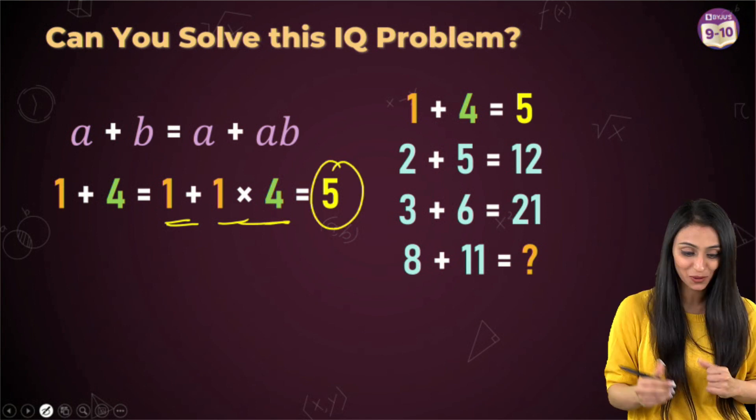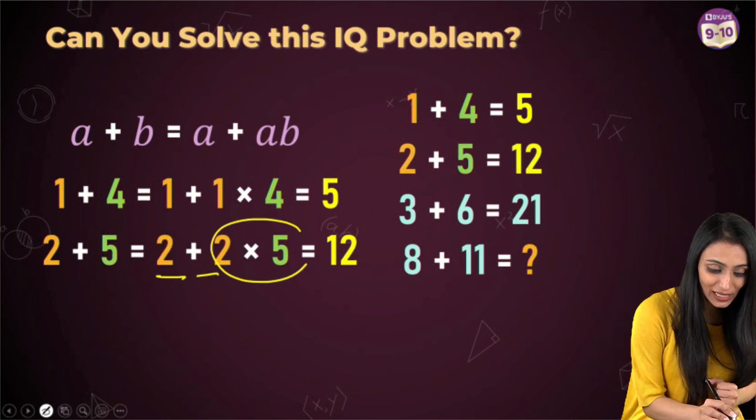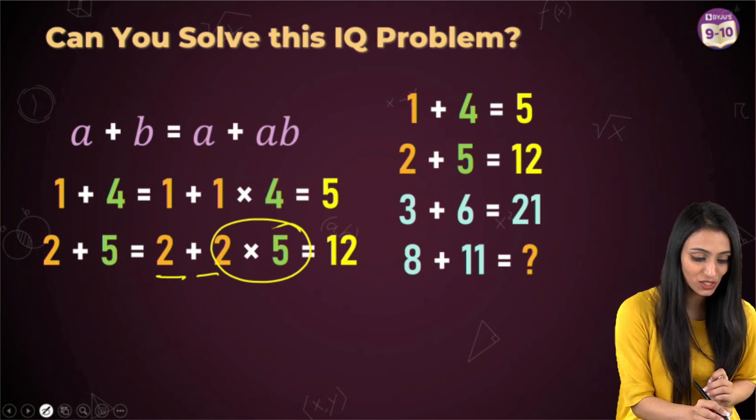Now let's see if we can apply this on the next one also. 2 plus 5 is 12. So I'm going to do the same thing. So I'll add 2 to 2 times 5, right? Which is AB. 2 is A and B is 5, that's going to be 12.